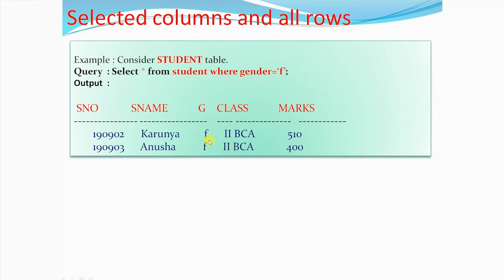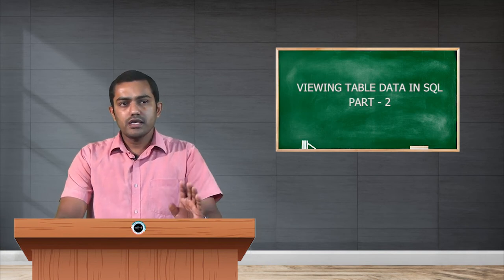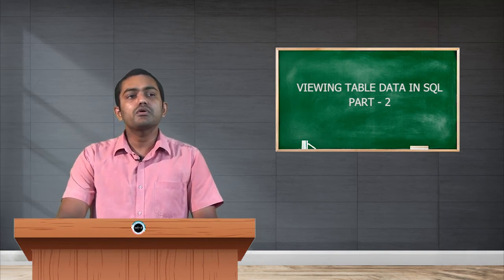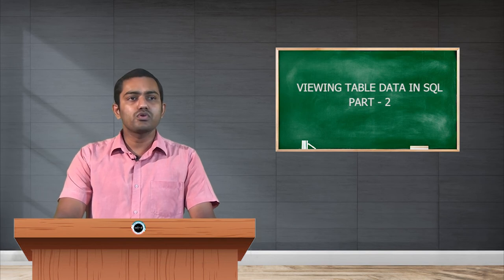The output shows all columns are displayed but only selected rows — male student details are not displayed. This is selected rows and all columns.